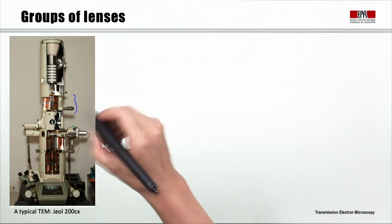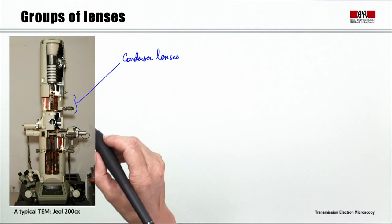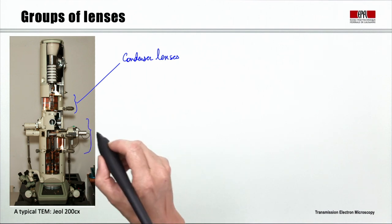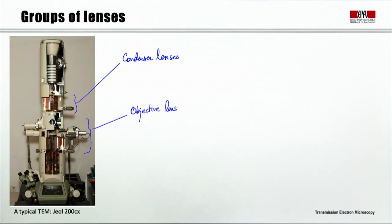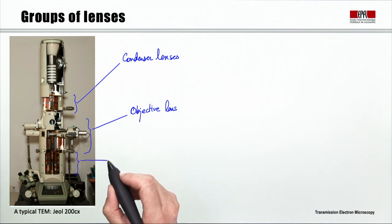The first group, before the specimen, is called the condenser lenses. These are the lenses used to form the beam that is exiting the gun and project it onto the specimen. The second block is the objective lens and its apertures — a very important lens used to make the first intermediate image of the specimen and also a diffraction pattern. The third group, made of the intermediate lens and projective lenses, allows us to change the magnification to look at either the image or the diffraction pattern.